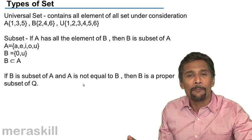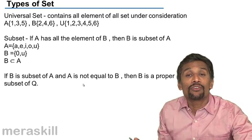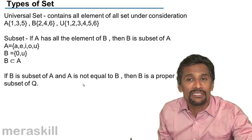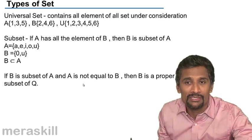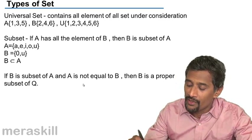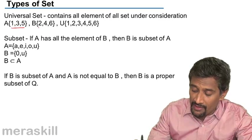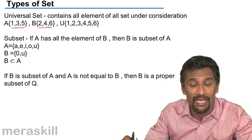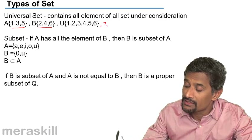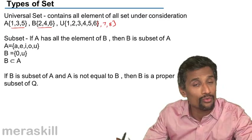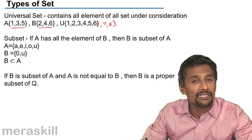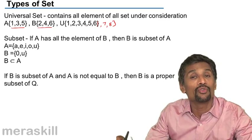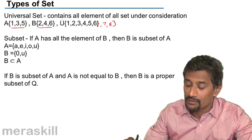The set of students of the school is called the universal set. Just as the set of rational numbers is the universal set, the set of integers, natural numbers, and whole numbers are all subsets of the set of rational numbers. So if given sets A, B, C, another set which contains all the elements of A, B, and C is called the universal set — the big set — and these are all parts of it.